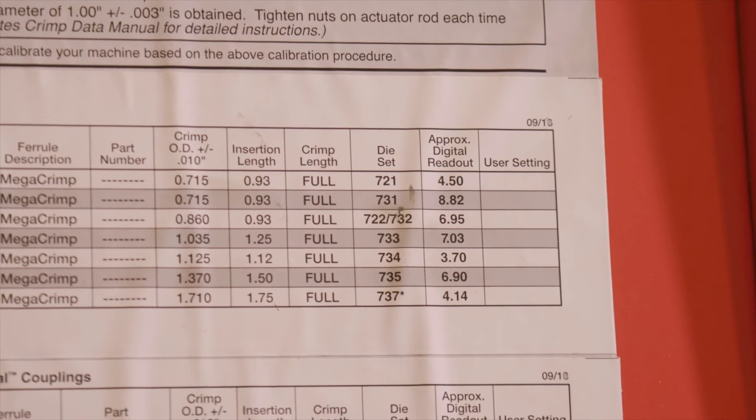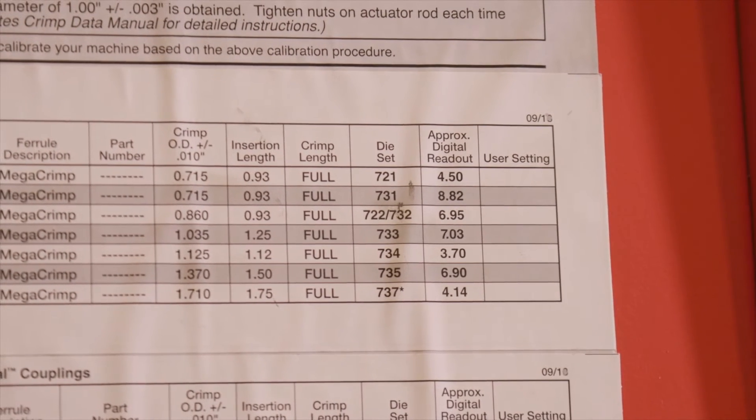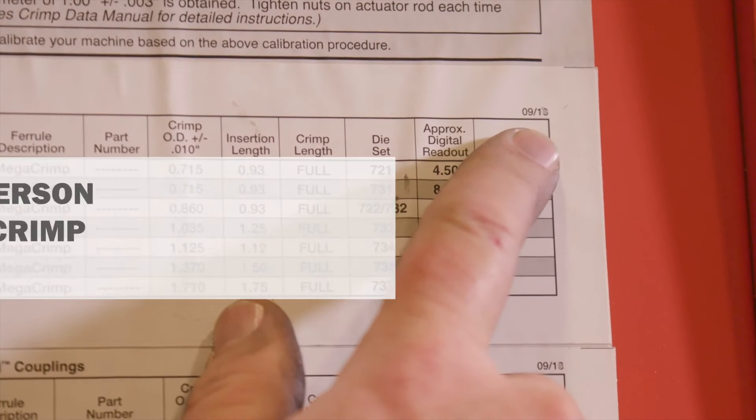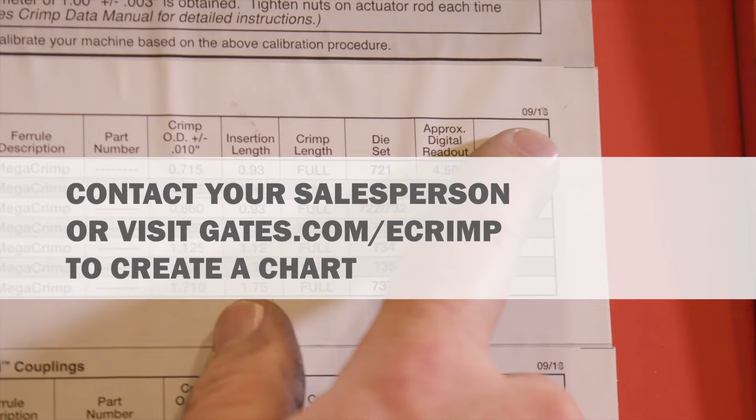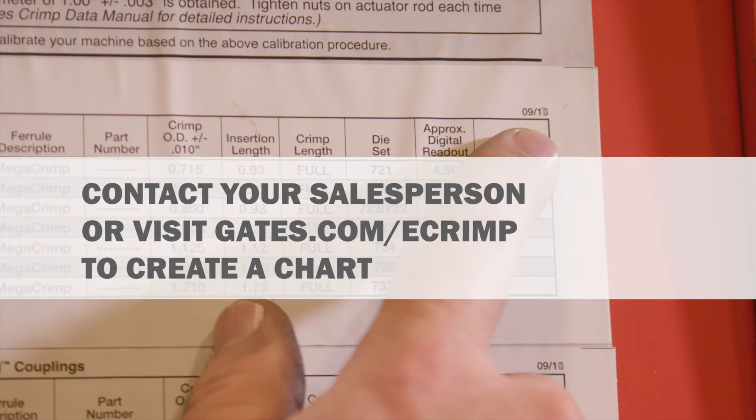This is a good time to check that the crimp decals are up to date. If not, contact your local salesperson for the latest version or go to gates.com/ecrimp to create, download, and print a custom chart.